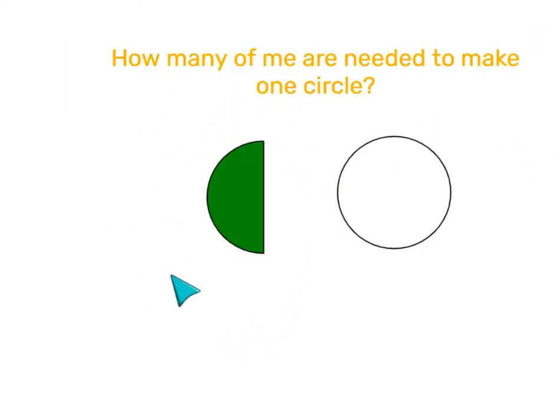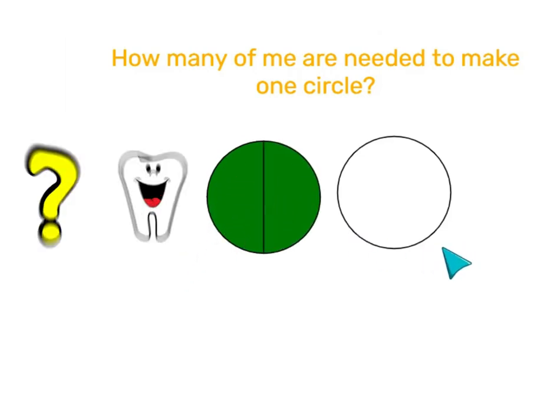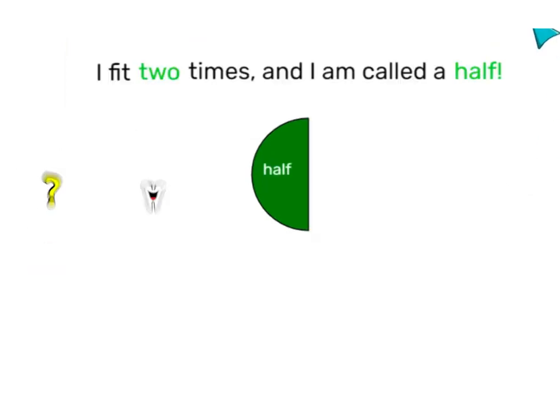But what about a piece like this? We can tell that it takes two to fill the whole circle, but do we call it a tooth? No. This special piece is called half.